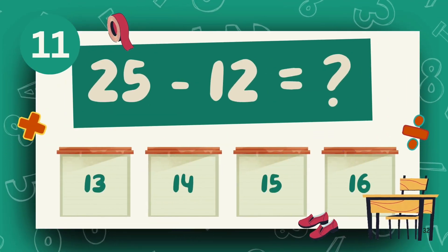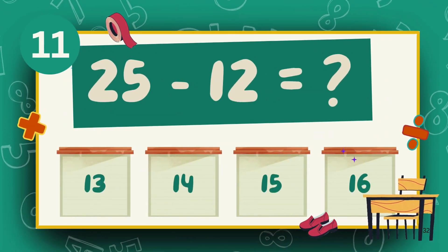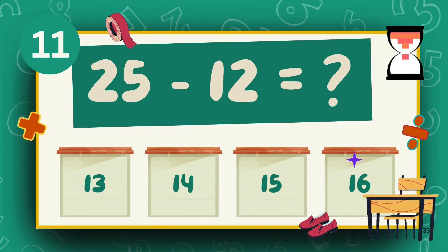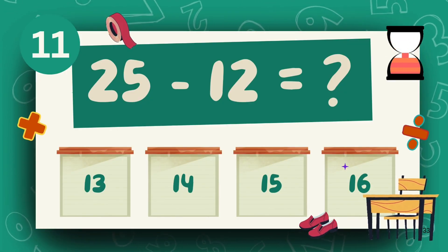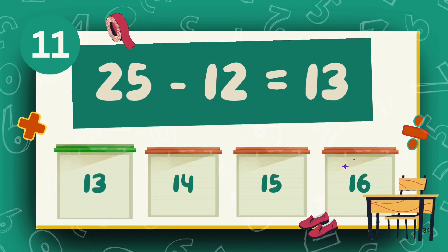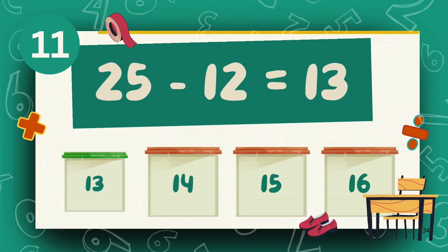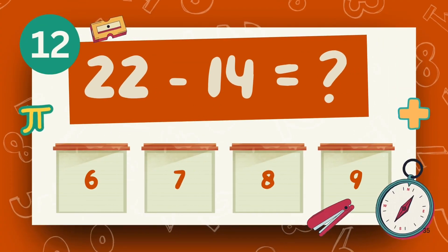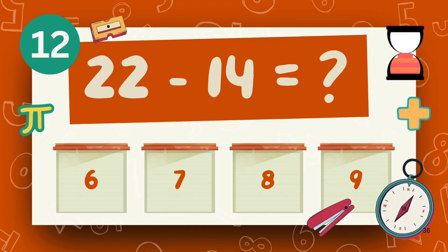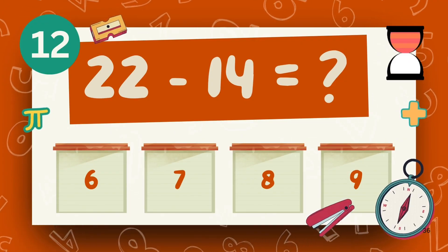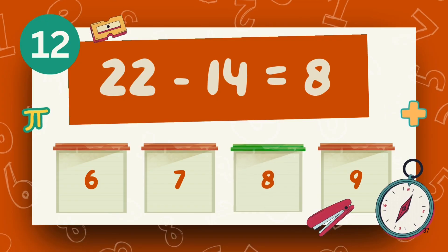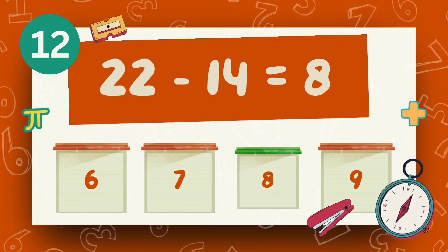What is 25 minus 12? The answer is 13. What is 22 minus 14? The answer is 8.